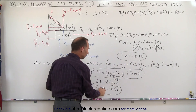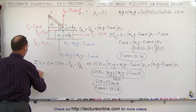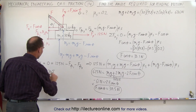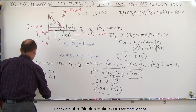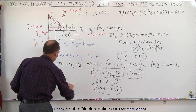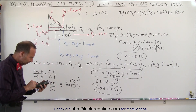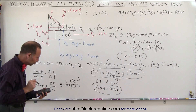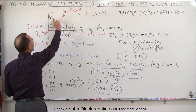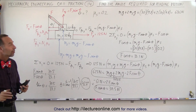Now I have F·sinθ = 30.5 N and F·cosθ = 33.1 N. Dividing one by the other eliminates F: tanθ = 30.5 / 33.1, so theta equals arctan(30.5 / 33.1) = 42.7 degrees. That is the angle the bracket makes with the horizontal when M1 is just about to begin sliding.